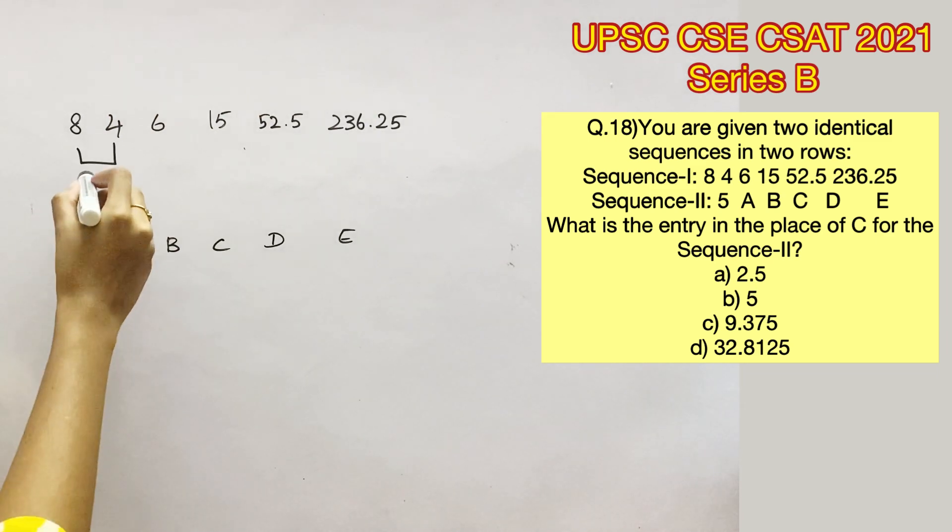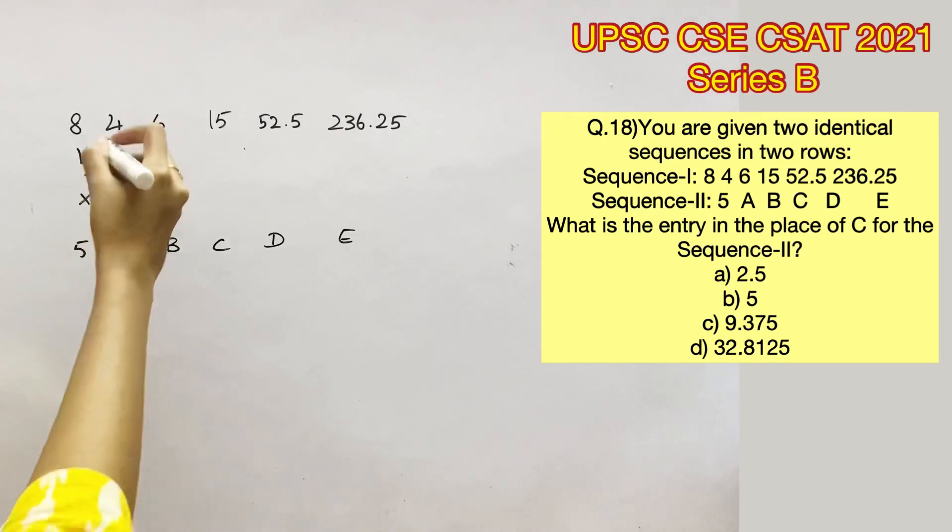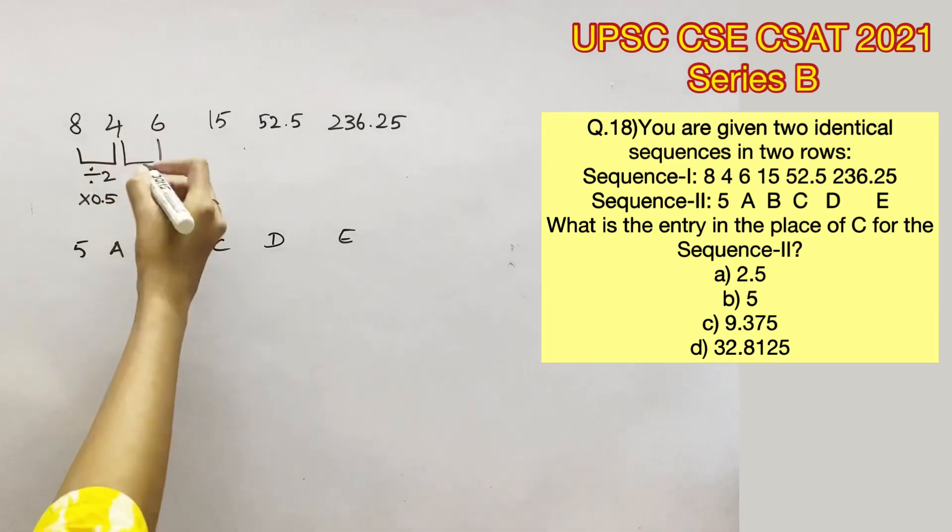If you take the first two terms, it's obvious that 8 divided by 2 is 4. We can also represent it in the form of 8 into 0.5 equals 4. It's better to remember that 4 into 1.5 equals 6 because this relation is quite asked in many competitive exams.